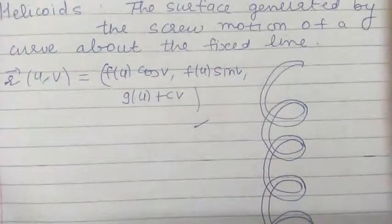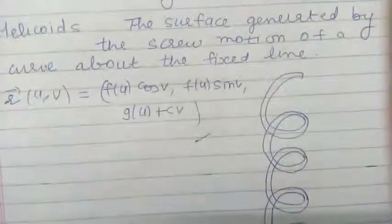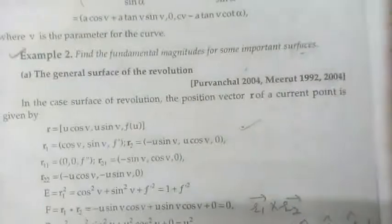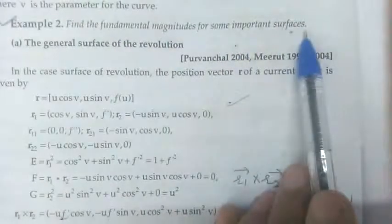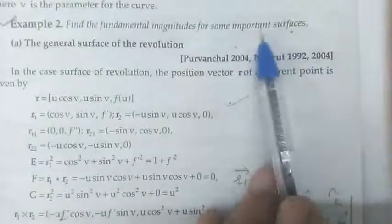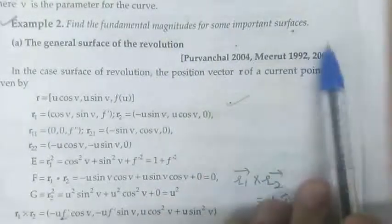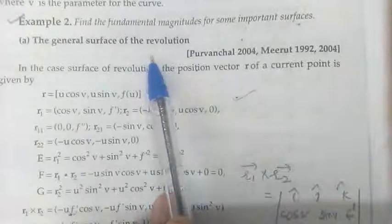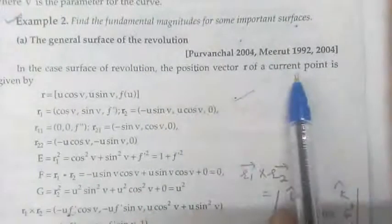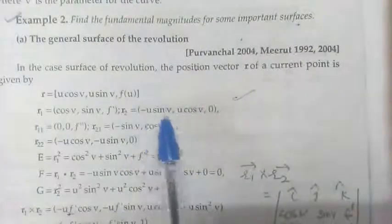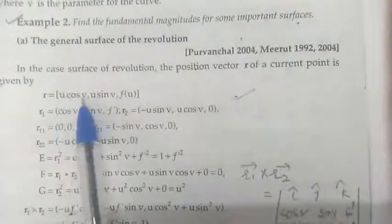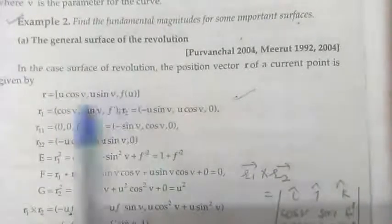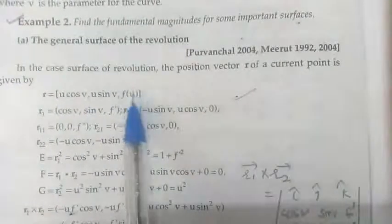Now, we will use these coordinates in the numerical problems. Let us see the problems based on this. The first problem is to find the fundamental magnitudes for some important surfaces. We will find the fundamental magnitudes for all the surfaces we have studied. The first is the general surface of revolution, whose position vector of the current point is r = (u cos v, u sin v, f(u)), where x, y, z are the respective coordinates.